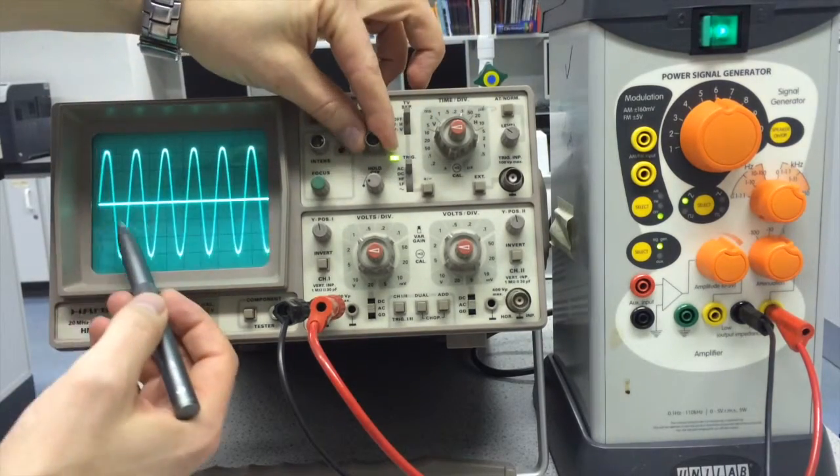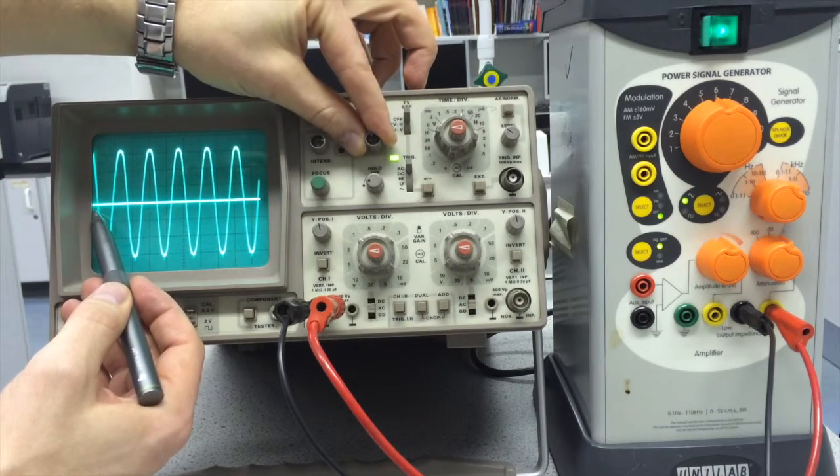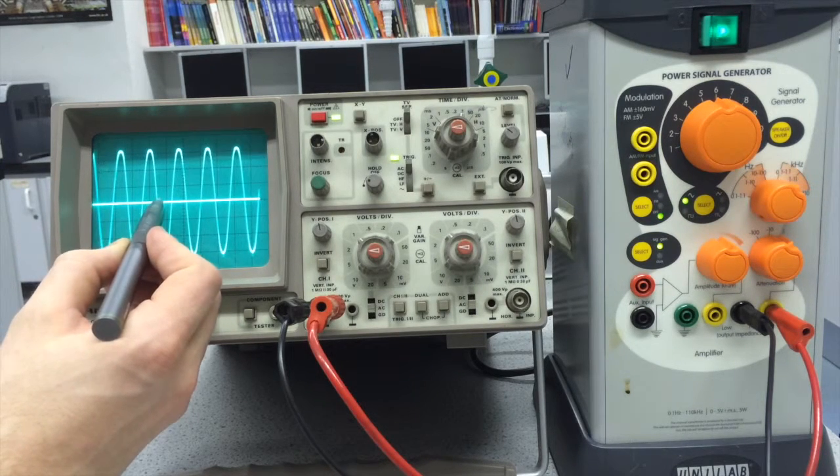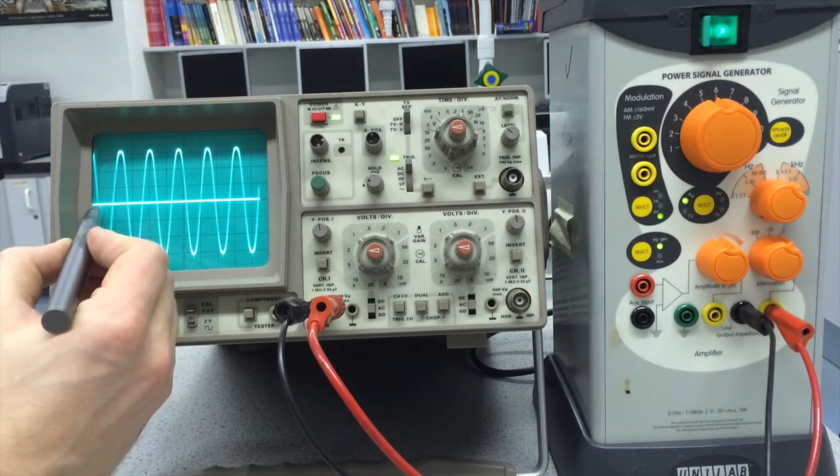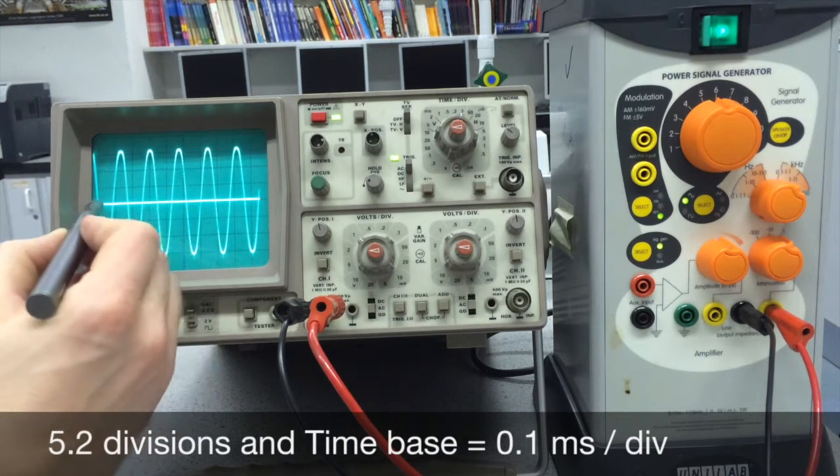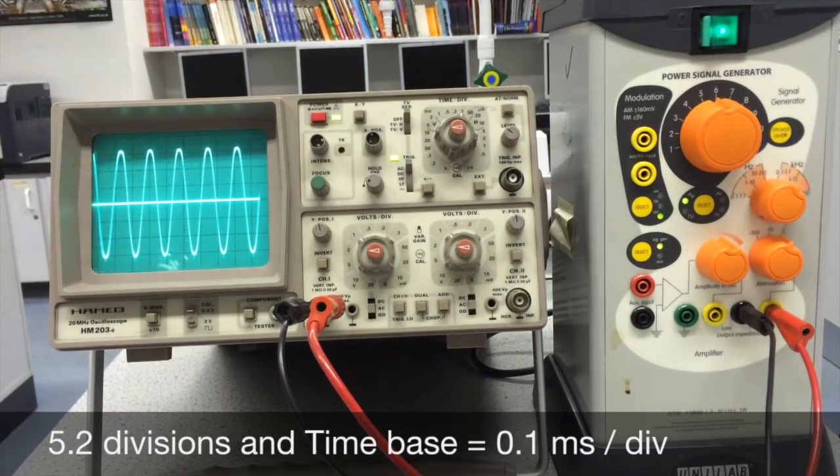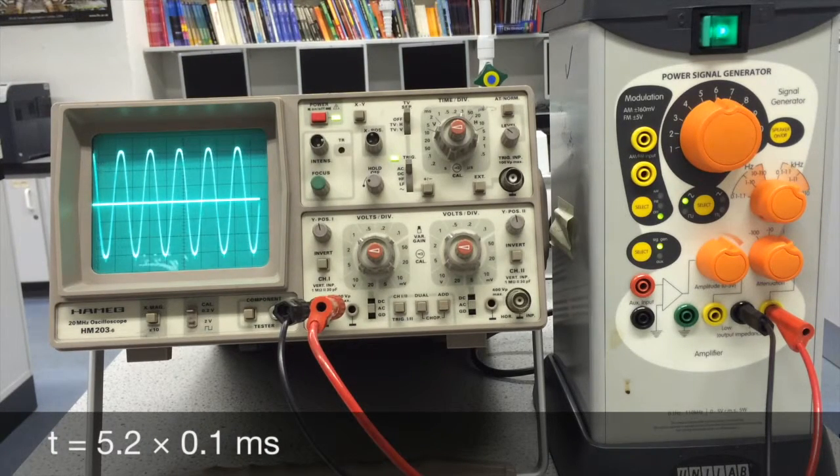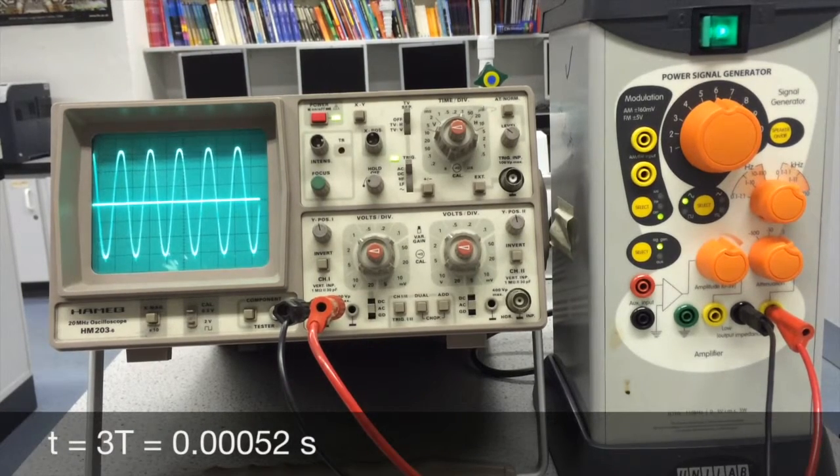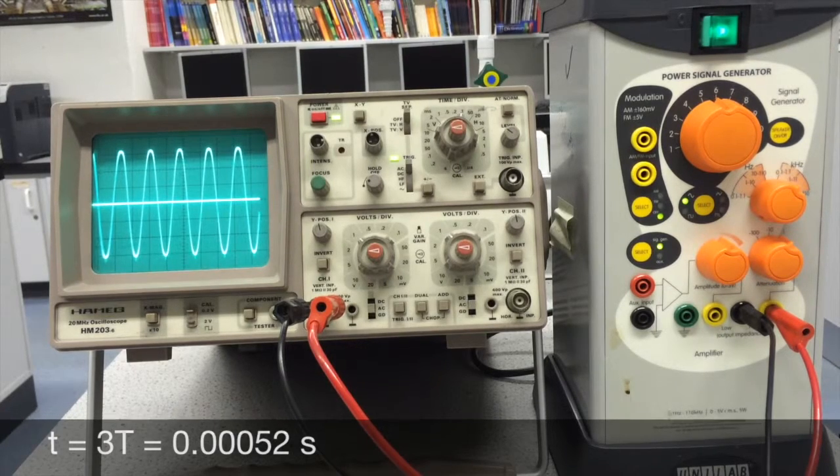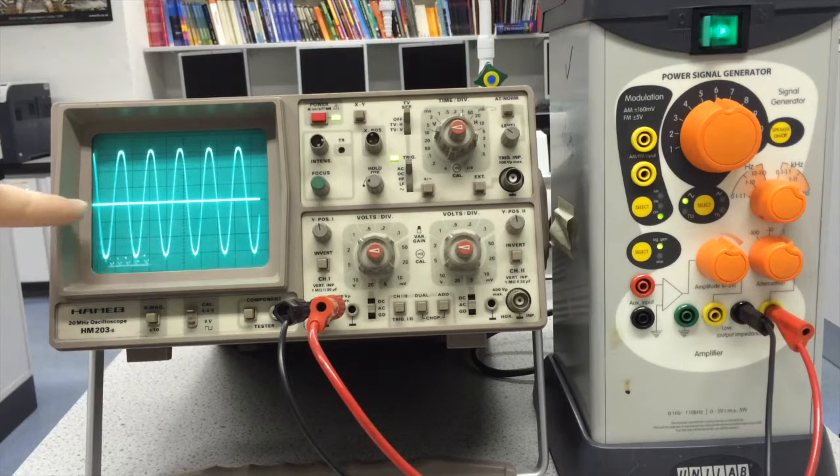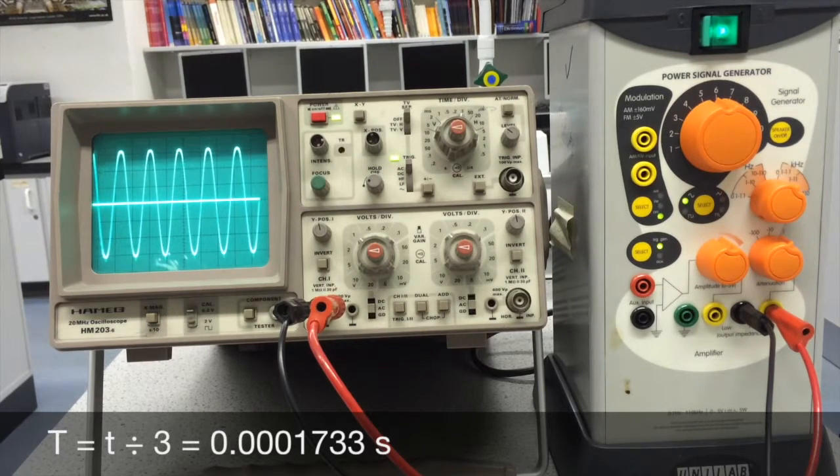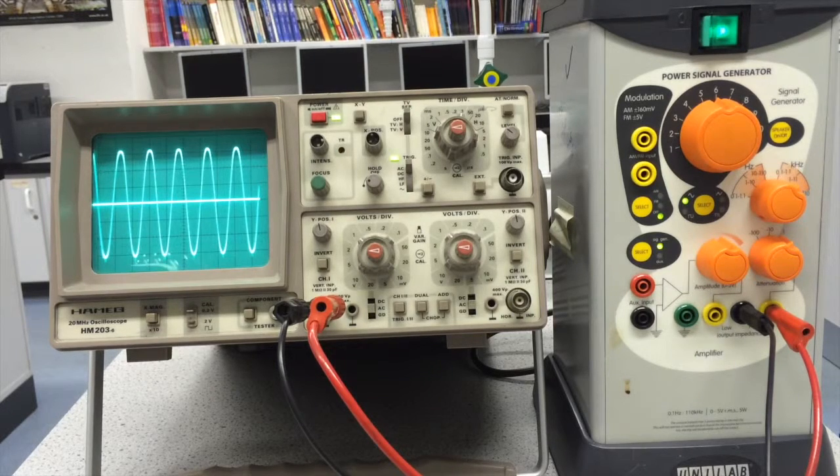So the number of divisions for three complete wave cycles is 2, 4, 5.2, so that's one cycle, two cycles, three cycles, or it's five squares all the way to the middle and then the 0.2. I multiply the number of divisions by the time base setting which is now 0.1 milliseconds and that comes out as 0.00052 seconds. I divide that by three because I want to know the time period, which is that total amount of time divided by three because I did three wave cycles, and that is 0.0001733 seconds, that's the time period.